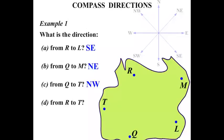What about from R to T? We're going from R towards T. So that arrow direction, repeating that, would be South West.